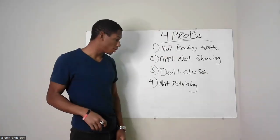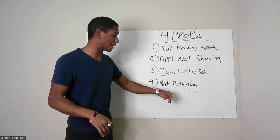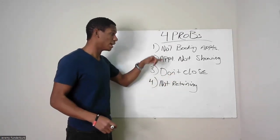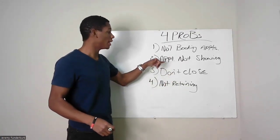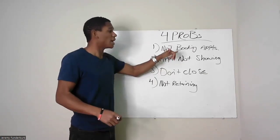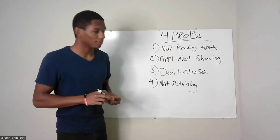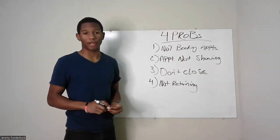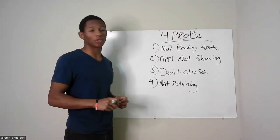And they come in this order because you don't have to worry about retaining clients if you didn't close in the first place. You don't have to worry about closing if the appointments didn't show. And you don't have to worry about appointments not showing if you didn't book the appointment in the first place. So these are literally the only four real problems you're going to have in your agency, and they fall in this order.